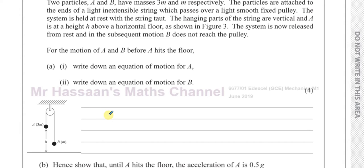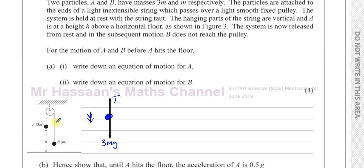Let's consider particle A. The forces acting on A are its weight acting vertically downward, which is 3MG, and the tension in the string holding it up. We know A is going to accelerate towards the ground because B doesn't reach the pulley, and the mass of A is greater than the mass of B. So the acceleration is downward for A.